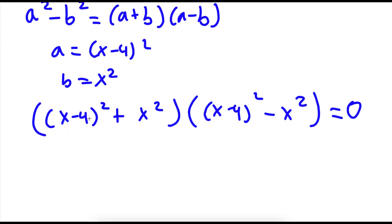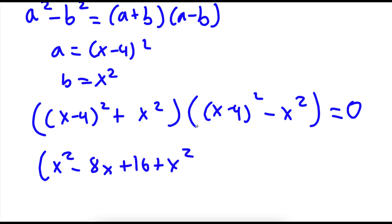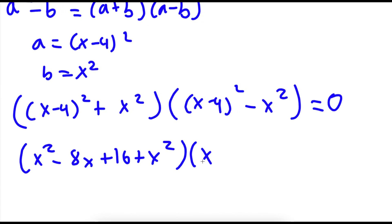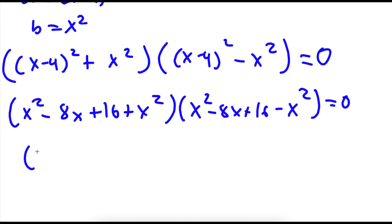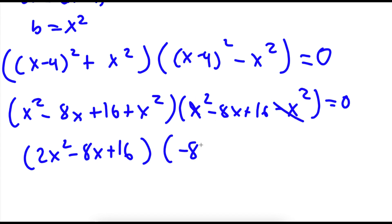Now, x minus 4 squared is equal to x squared minus 8x plus 16. So I have x squared minus 8x plus 16 plus x squared, times — again — x minus 4 squared is x squared minus 8x plus 16, this time minus x squared. Simplifying: x squared plus x squared is 2x squared, so I have 2x squared minus 8x plus 16 times x squared minus x squared. Those cancel, leaving negative 8x plus 16. This equals 0.